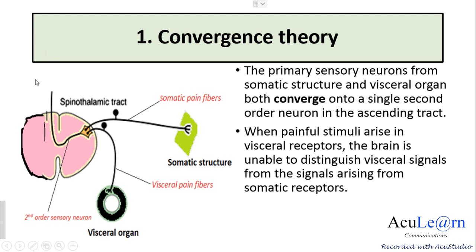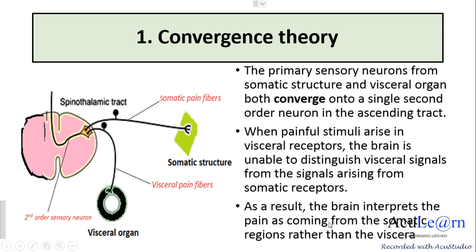When a painful stimulus arises from the visceral organ, the brain is unable to distinguish whether the signal is coming from the viscera or from the somatic receptors. Since signals from somatic receptors are more common than visceral signals, the brain interprets the pain as coming from the somatic regions rather than the viscera. This theory is called the convergence theory.